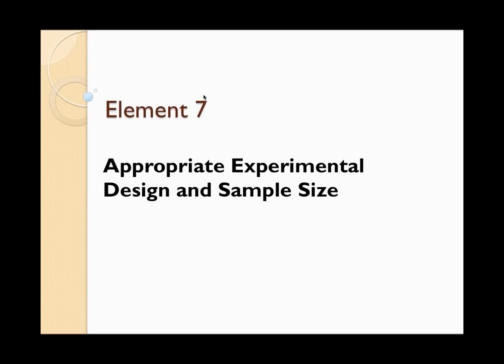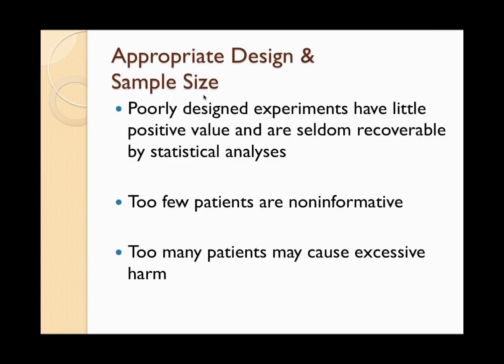Element seven is appropriate experimental design and sample size. There is more to study design than sample size — poorly designed experiments have little positive value and are seldom recoverable by statistical analyses. The consideration of power is critically important when assessing how ethical a study is. For any given human cost, there is an obligation to maximize efficiency in experimental design. If two experiments have equal cost with similar scientific value, the one with higher power is preferable because it minimizes risk and maximizes benefits. However, the determination and definition of statistical efficiency are sometimes controversial.